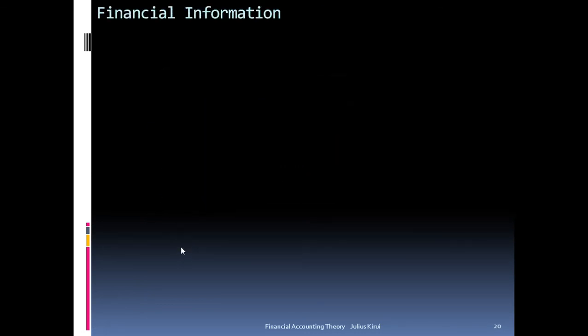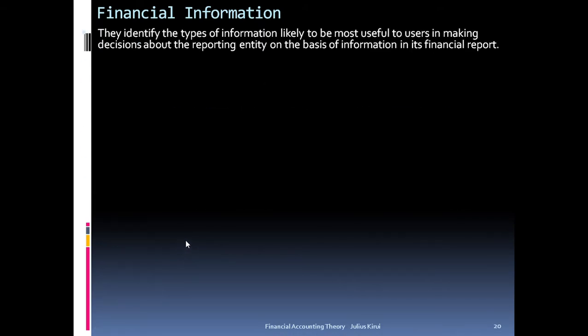Financial information is critical to have in mind. Every successful financial accounting system brings financial information so that users can identify the types of information most useful in making decisions about the reporting entity, on the basis of information in the financial reports. The initial interest of preparing financial information is for the consumers of accounting information — the fundamental qualitative characteristics.